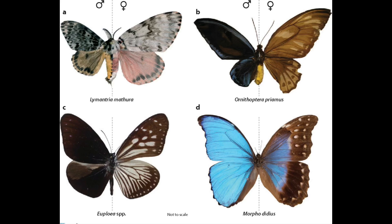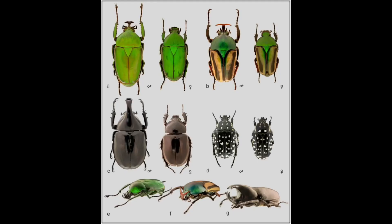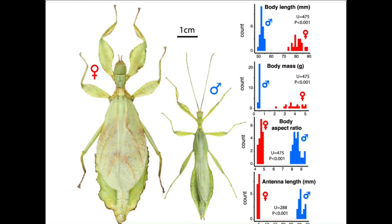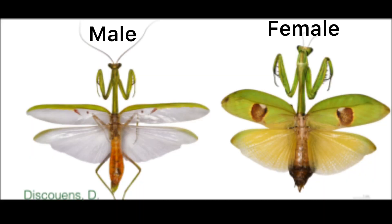First I'm going to talk about sexual dimorphism in the insect world. In the insect world, females are usually larger and more aggressive than males. You're probably asking why females are bigger — it's due to the fact that they lay eggs, and when it comes to insects, they lay a lot of eggs. When it comes to being more aggressive, they need to remind the weak male that they're always in charge.